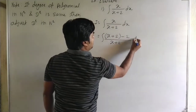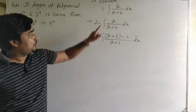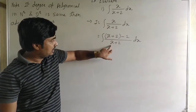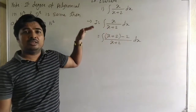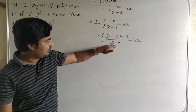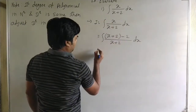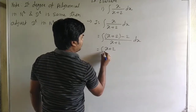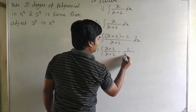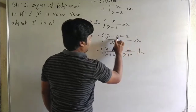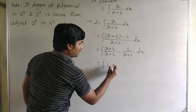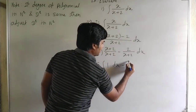We express the numerator in terms of the denominator — the value of numerator does not change, but it is written in terms of the denominator. Now separate the terms: it becomes x plus 2 upon x plus 2 minus 2 upon x plus 2 dx. Separate the denominator of both terms.